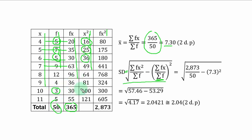3 times 100, you have 300 and so on. So you also add this column down. And you have 2873.